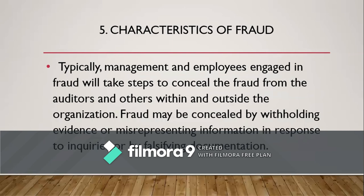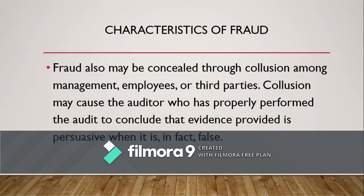Number five is the characteristics of fraud. Typically, management and employees engaged in fraud will take steps to conceal the fraud from auditors and others within and outside the organization. Fraud may be concealed by withholding evidence, misrepresenting information in response to inquiries, or by falsifying documents. Fraud may also be concealed through collusion among management, employees, or third parties. Collusion may cause the auditor — who has properly performed the audit — to conclude that evidence provided is persuasive when it is in fact false.